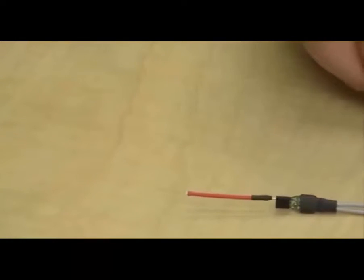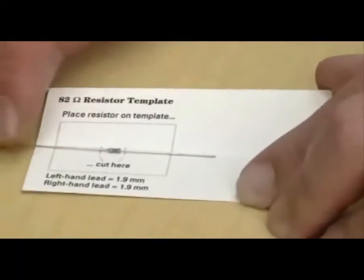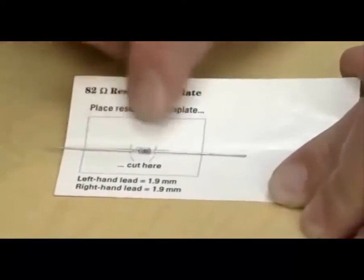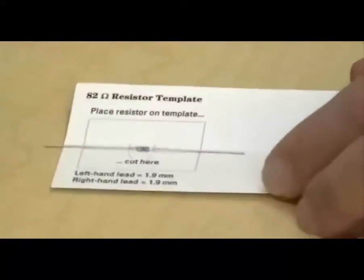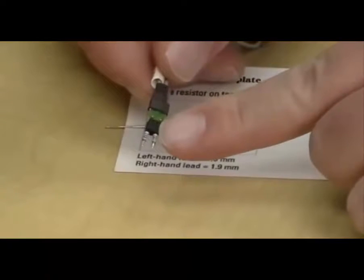Now, if you're using the 82 ohm resistors for max bandwidth, you'll want to use the 82 ohm template that they came with and you'll want to cut the resistors to length and then insert them into the socketed head as shown here.